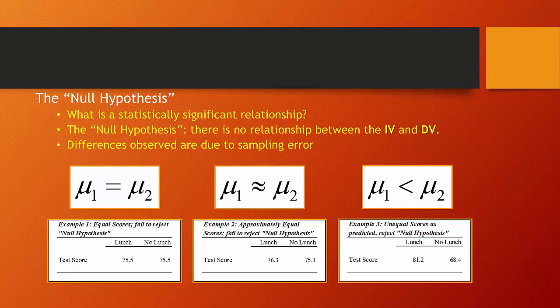Critical to understanding how hypothesis testing works is the concept of the null hypothesis. A statistically significant relationship observed in a sample is one that we can, with a high degree of confidence, infer also exists in the population as a whole. For example, if we observed a sample of children where those who did not bring lunches to school performed more poorly on tests than those who did, and if our sample is large enough and the difference in test scores is great enough, we'd be able to infer a relationship between nutritional consumption and academic performance.